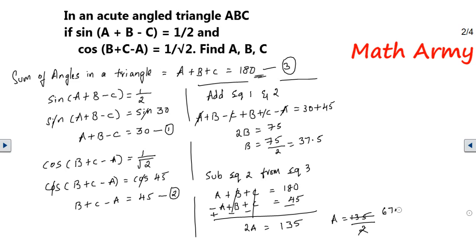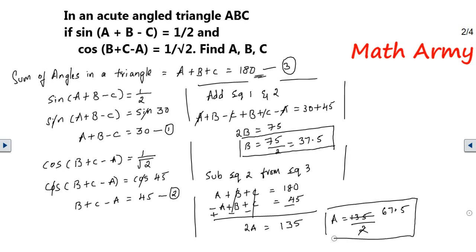By just looking at my explanation it may seem very easy, but practice by writing the question — only then will you know how much of the problem has gotten into your head. I got B value and I also got A value. Now take A and B and substitute into equation 3: A + B + C = 180°. A is 67.5° and B is 37.5°, so write 67.5 + 37.5 + C = 180°.